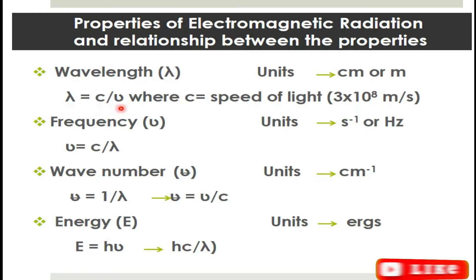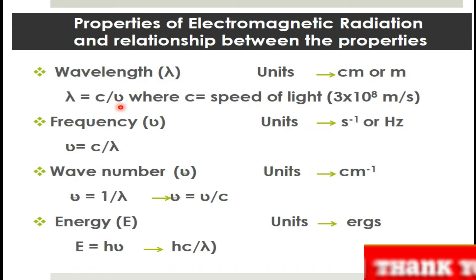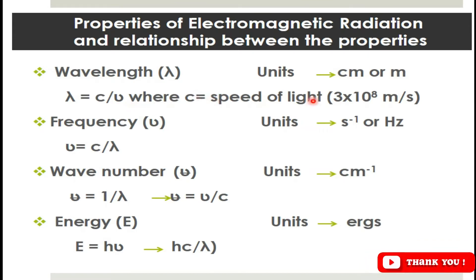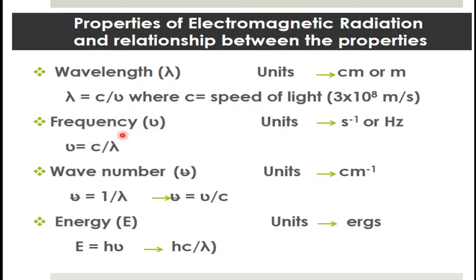The relationship of wavelength with speed of light and frequency can be mathematically represented as: lambda equals c divided by nu, where c is the speed of light, which has a numerical value of 3 × 10⁸ meters per second. Nu is the frequency — the number of waves passing through a point per unit time — and it has units of either second inverse or hertz.